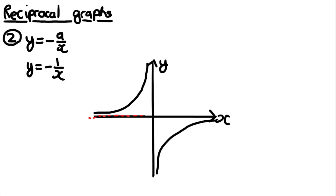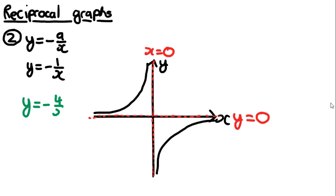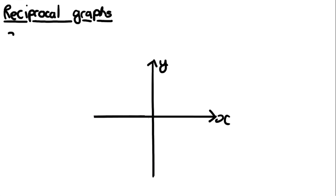Remember, asymptotes are very important to label — they will be asked and you need to label them. The asymptotes are the exact same as before: x = 0 and y = 0. Similarly, sketching y = -4/x on the same axes moves the curves further away from the axes — that is the only thing that changes when you increase the numerator.